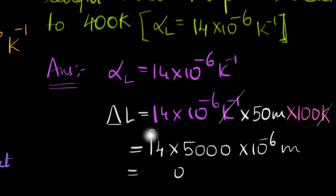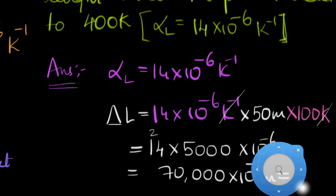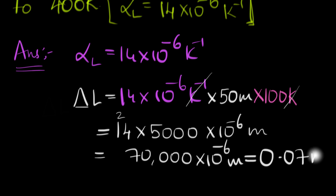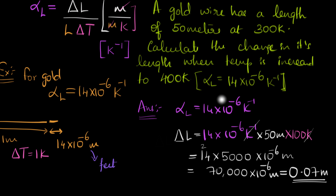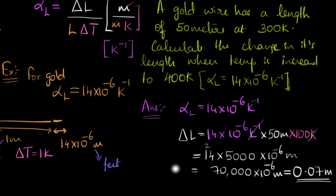So delta L equals 14 times 10 to the minus 6 times 50 times 100, which gives 70,000 times 10 to the minus 6 meters, equal to approximately 0.07 meters. That's how much the wire expands on heating in this example. Notice we used the expression delta L equals alpha L times L times delta T. If you understand what alpha L really means, it's easy to solve problems like this.